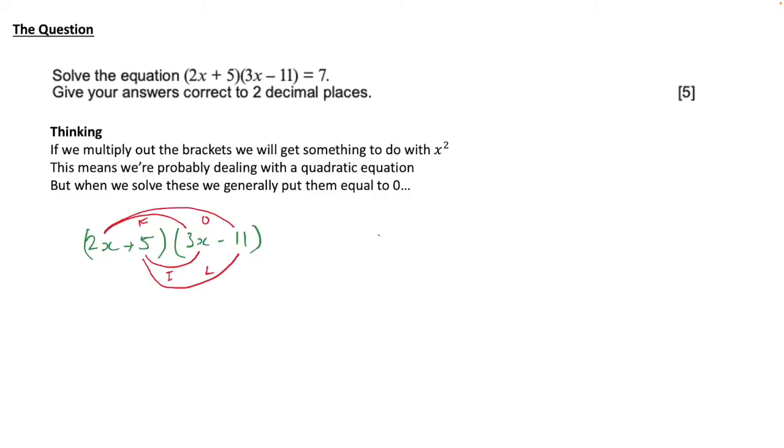First of all we'll need to multiply out the brackets, so we can use the FOIL technique for this. And the first in each bracket is 2x and 3x, so we times them, so 2x times 3x. The outsides are 2x and minus 11 which we multiply. Then the insides are 5 and 3x, so we multiply them. And then the last ones are 5 times minus 11.